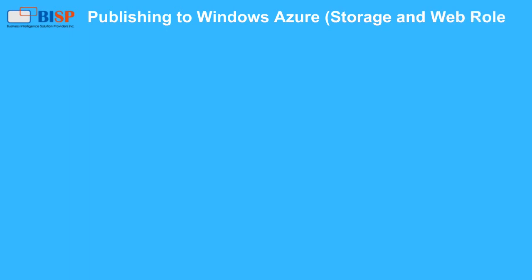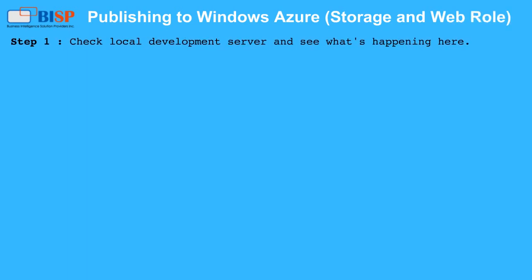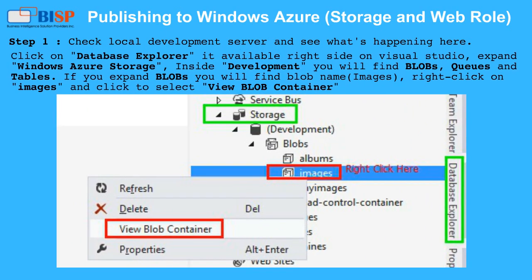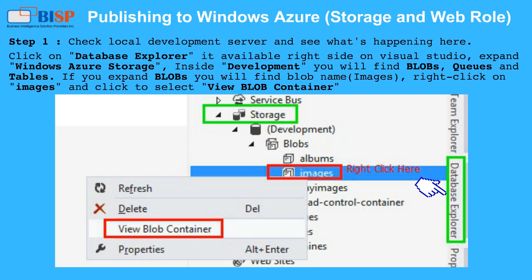Publishing to Windows Azure Storage and Web Role. Step 1: Check the local development server and see what's happening here. Click on Database Explorer on the right side in Visual Studio. Expand Windows Azure Storage. Inside development you will find blobs, queues, and tables.